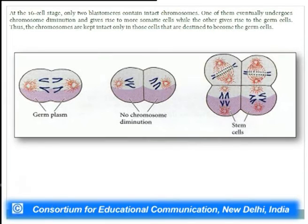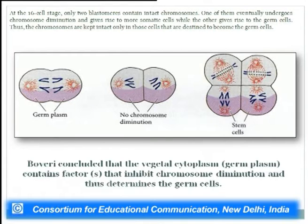Chromosomes are kept intact only in cells destined to become germ cells. Boveri then centrifuged the zygote to redistribute the cytoplasmic material; in the centrifuged egg, both cells after the first cleavage showed no chromosomal diminution because both received the vegetal material. At the four-cell stage, the two cells that received the dark purple cytoplasmic portion also showed no chromosomal diminution.